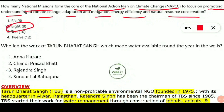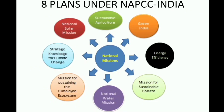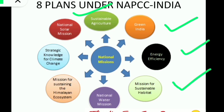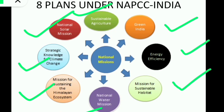There are eight important missions under the NAPCC plan: (1) National Mission for Sustainable Agriculture, (2) National Action Plan for a Green India, (3) National Action Plan for Energy Efficiency, (4) National Action Plan for Sustainable Habitat, (5) National Action Plan for Water Mission, (6) National Mission for Sustaining the Himalayan Ecosystem, (7) National Mission for Strategic Knowledge for Climate Change, and (8) National Solar Mission.